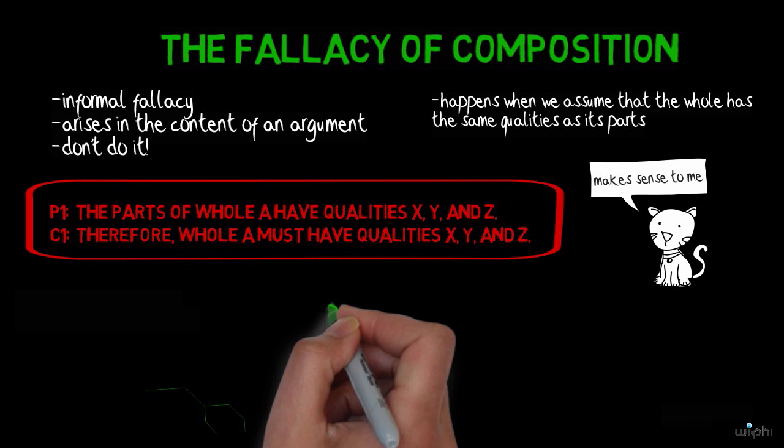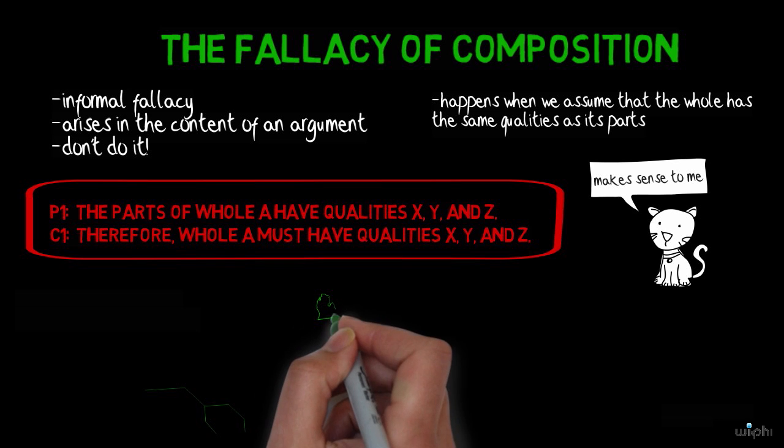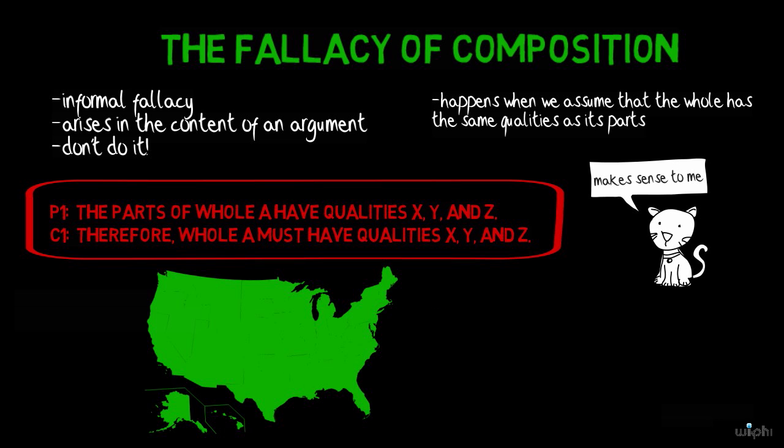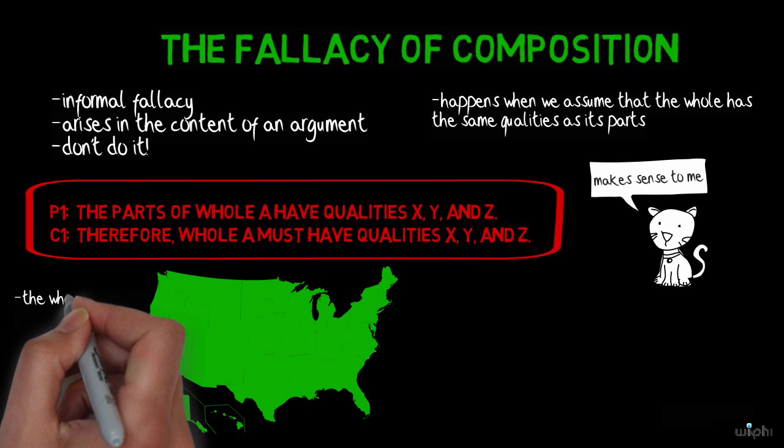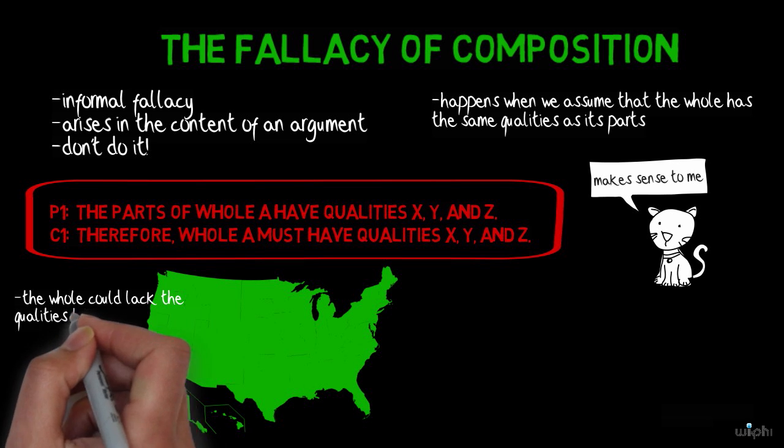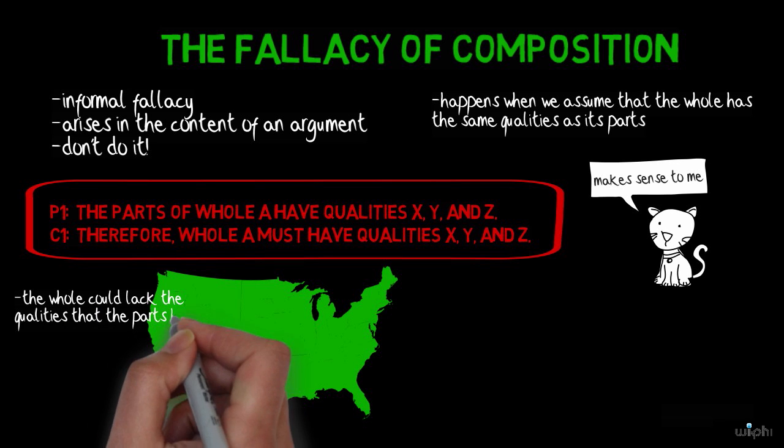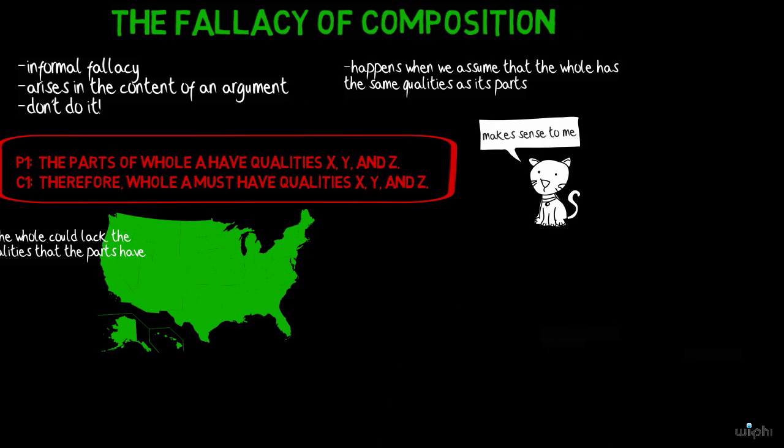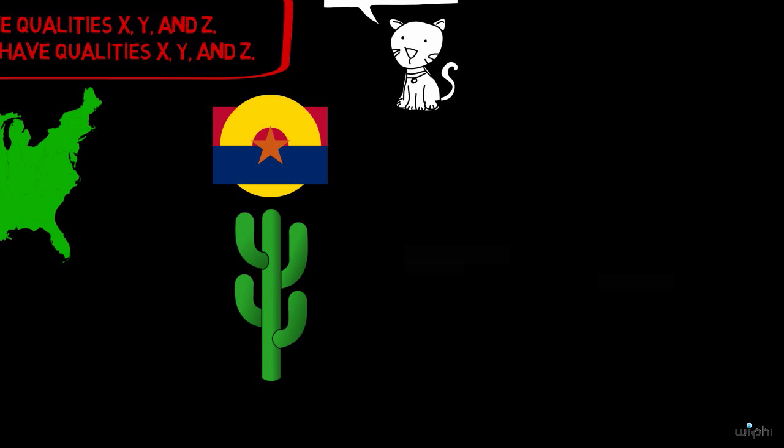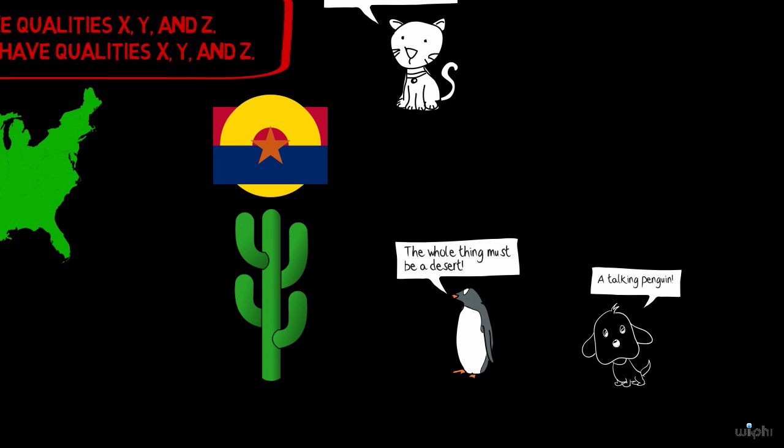The argument seems attractive, but the style of argument is like saying that because the states have some set of qualities, then the entire nation must have those qualities. You may now be able to see what's wrong with this line of reasoning. Without sufficient justification, we cannot infer that the whole has the same qualities as its parts simply because the parts have that quality. It may be the case that the whole lacks the qualities that the parts have. It's like saying that because Arizona has an arid climate, the entire nation has an arid climate too.